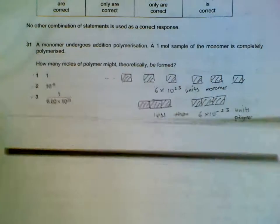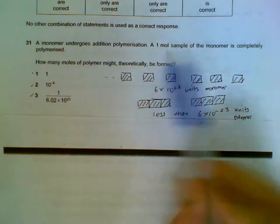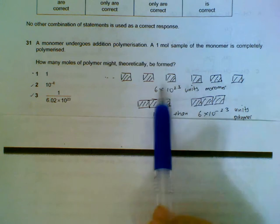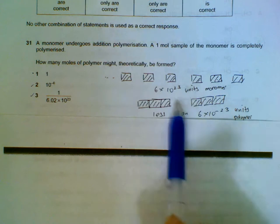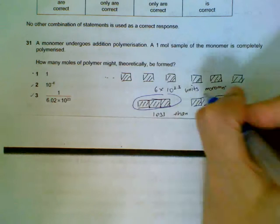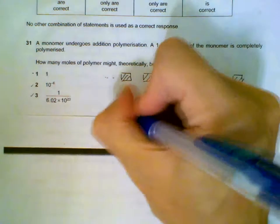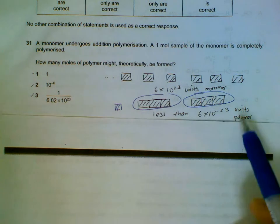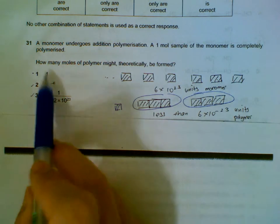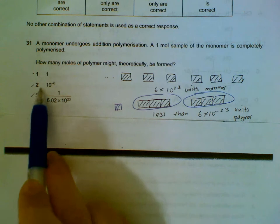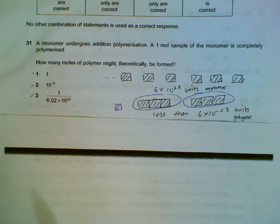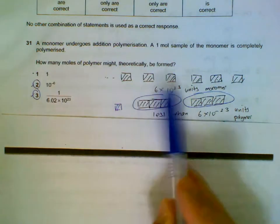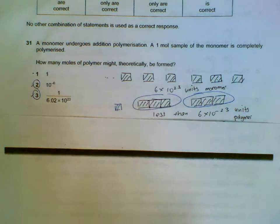Number 31: you can reason out the answer. We have one mole of monomers and then we polymerize it. You can visualize each monomer as one brick - we have 6×10²³ units of monomers. Some of them will join together to form the polymer. What we have eventually will be less than 6×10²³ units of polymer because they are grouped up. We can theoretically form one, as long as you form less than one mole of polymer the answer is acceptable. We will not get one mole of polymer because that would mean none of them have actually joined up.